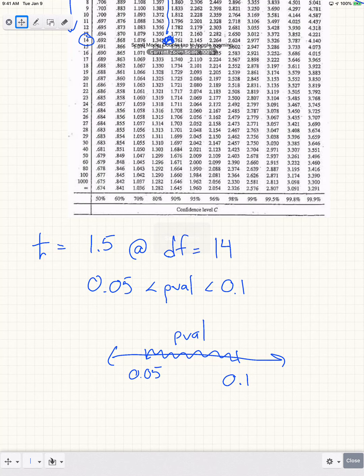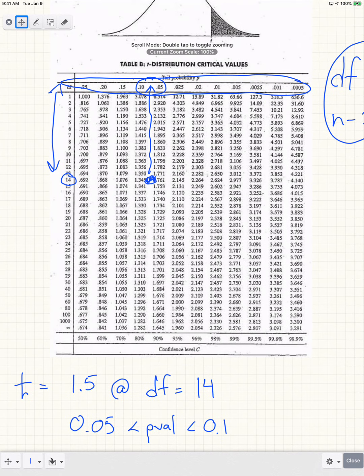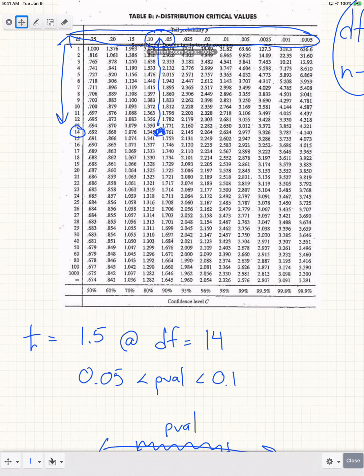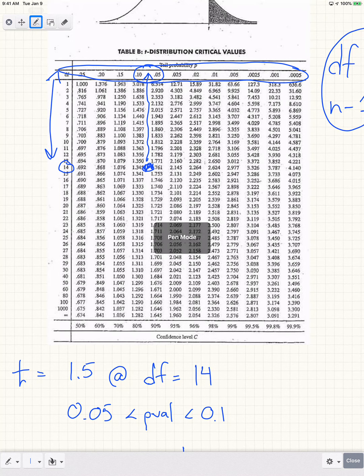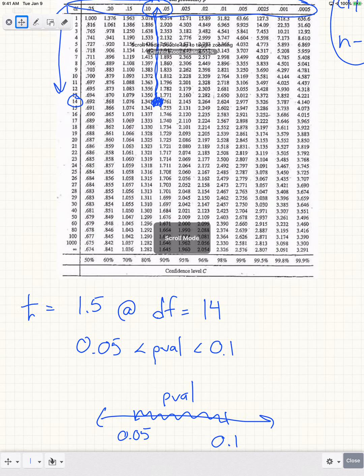One last thing I want to point out is a trap that many of us fall into when we're trying to find what the p-value is and kind of how we write it out, as far as 0.05 less than p-value less than 0.1. What I don't want you to do is to go okay, I know that my t-test statistic is somewhere right here, so I'm just gonna go up and then just shove the word p-value between that 0.1 and that 0.05.